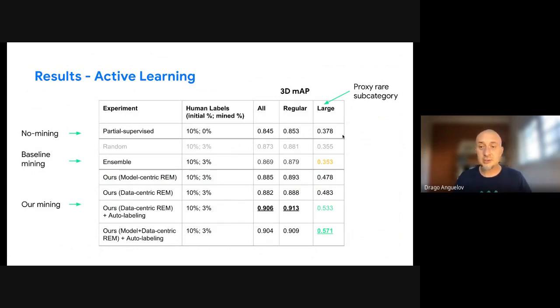And let's look at what the results look like. So the baseline is on top. We label 10 percent of data with humans. And this is the baseline. This is a set of results we get. And here I will focus on an example where we mine an additional three percent by using an ensemble of detectors. So we look for areas where the detectors are uncertain and we label them. So you can see that this is very standard technique, right? And you can see that, yes, with this method we get some improvement in the regular objects. But here for large objects, which is our proxy rare subcategory, we actually see a decline.